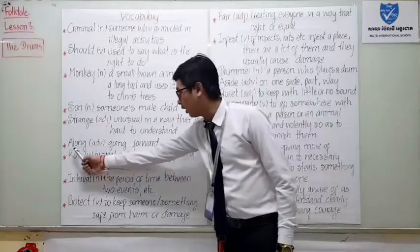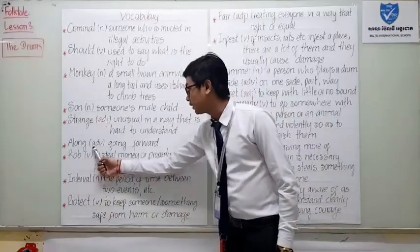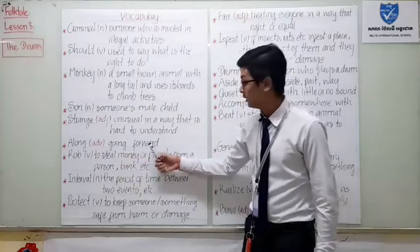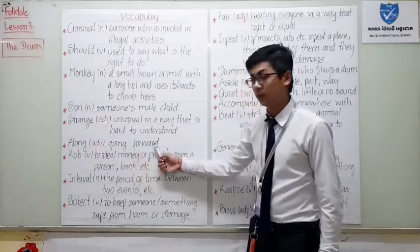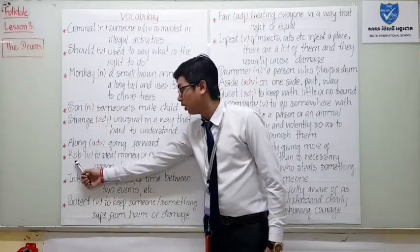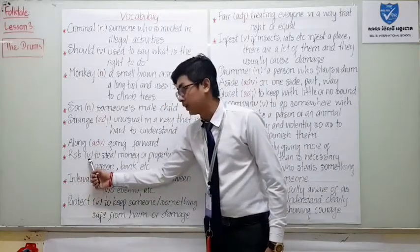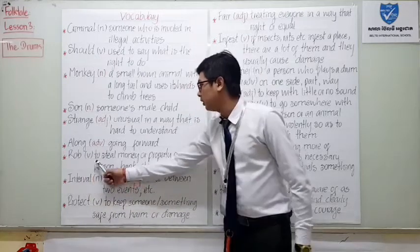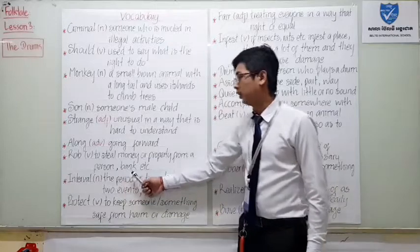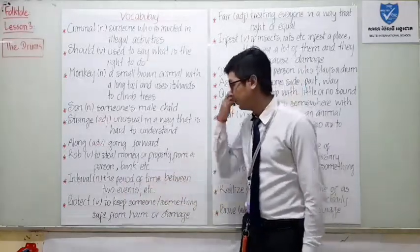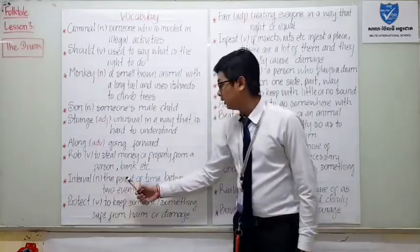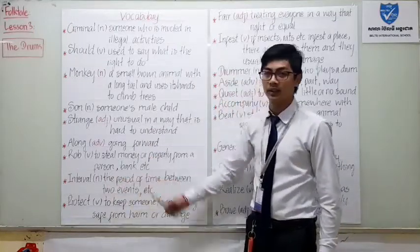Next word is 'along.' Along. Function: adverb. Meaning: going forward. Next word is 'drop.' Drop. Function: verb. Meaning: to steal money or property from a person, a bank, or etc.